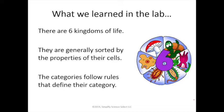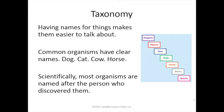In our traditional structure, that's the way most people have agreed to organize things. Not everybody agrees, and there are some other ways, but that's generally what we've decided to go forward with as of right now. They're generally sorted by the properties of the cells of things in that category, and each of those six kingdoms has rules that define it. Now taxonomy — what that means and what it's all about — is having names for things, so it makes it easier to talk about them.